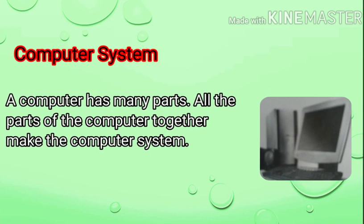A computer has many parts. All the parts of the computer together make the computer system. The computer system includes all the essential parts of the computer, i.e. monitor, keyboard, mouse, and CPU.